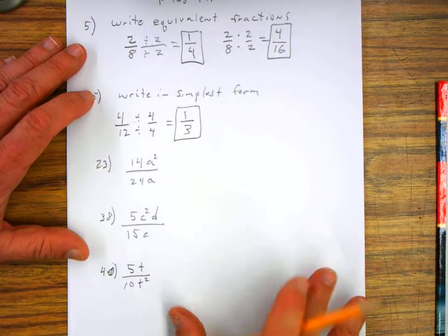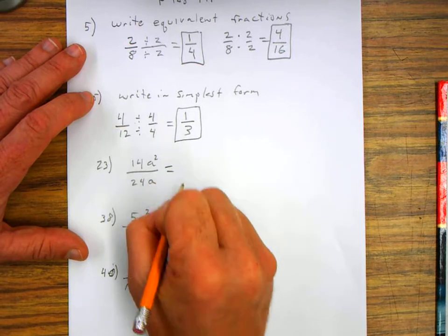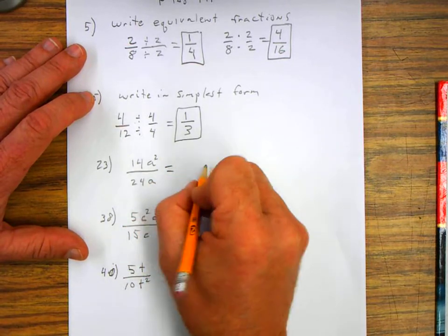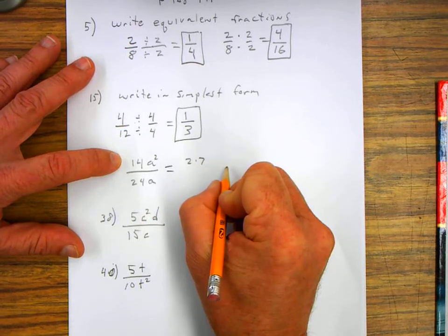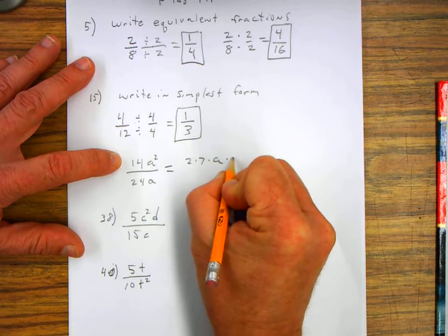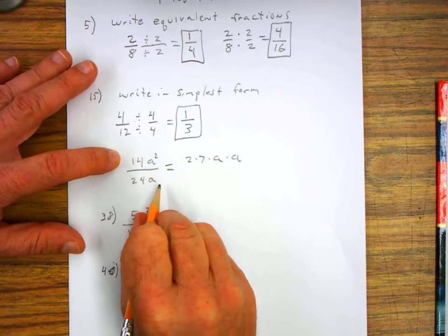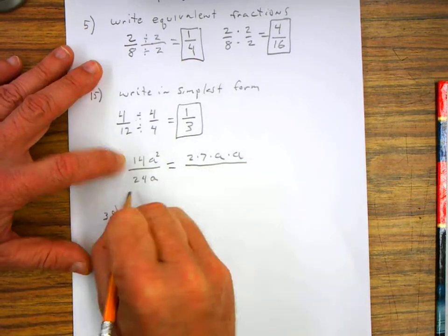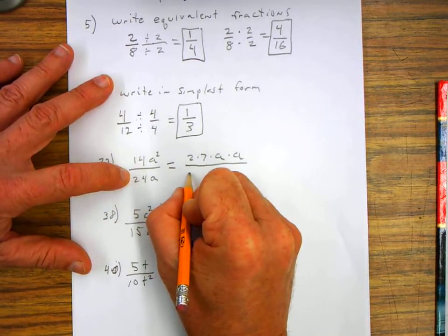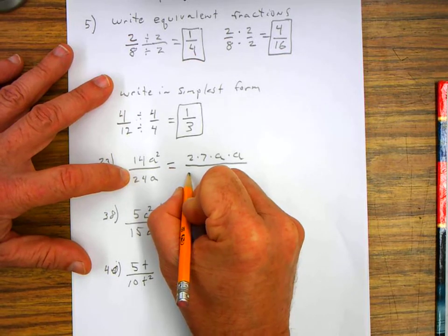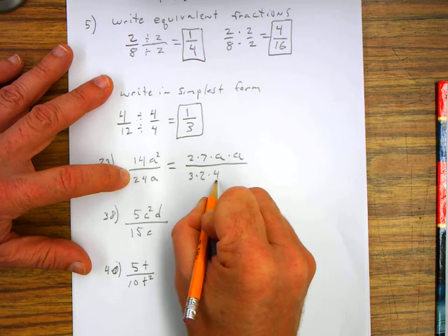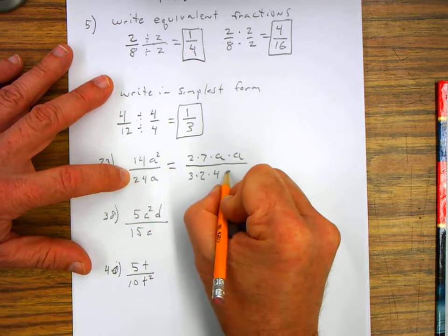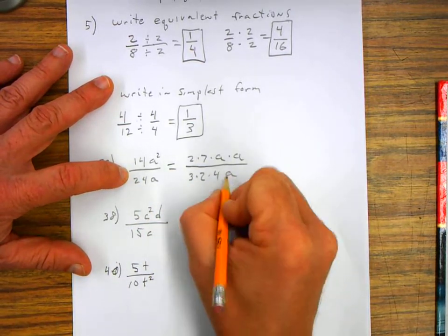Number twenty-three, write in the simplest form. So I'm going to expand this out. I can multiply two times seven, which is equal to fourteen, times a, times a. On the bottom, I'm going to write down, let's see, three times two times four. Three times two is six, times four is twenty-four, and the a times a.